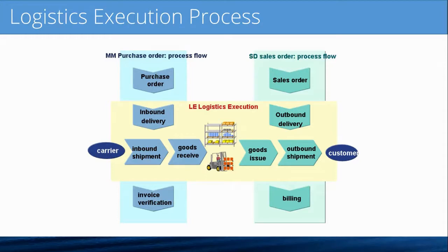Here's a process overview of the logistics execution module covering inbound and outbound delivery. On the left-hand side, the flow starts with the MM purchase order. We send out purchase orders, and we receive inbound deliveries — the common industry term is an Advanced Ship Notice, or ASN. ASNs can be converted into inbound deliveries through the IDOC process, which I'll demonstrate later. That is the standard SAP way of converting an external EDI ASN into an SAP transaction. The carriers then pick up the load from the supplier, an inbound shipment is created in the transportation process, the shipment arrives at your warehouse or plant, and you post a goods receipt.